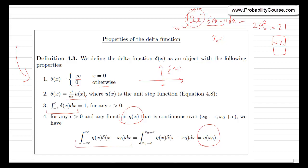Using the delta function to analyze mixed random variables is not strictly necessary — we have already seen in the previous video how to analyze mixed random variables. But as you will see, using the delta function simplifies the analysis and is actually intuitive, so it is a useful tool that is used often when dealing with mixed random variables.